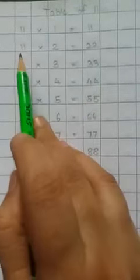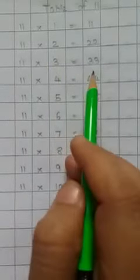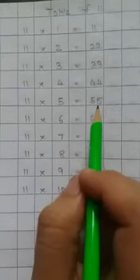Okay, let's do it once again. 11 1s are 11, 11 2s are 22, 11 3s are 33, 11 4s are 44, 11 5s are 55, 11 6s are 66, 11 7s are 77, 11 8s are 88, 11 9s are 99, 11 10s are 110.